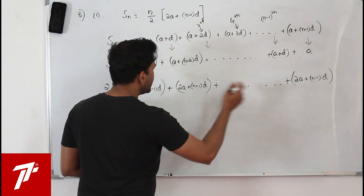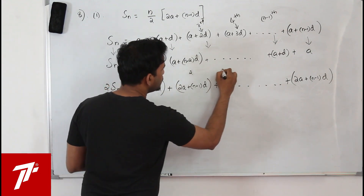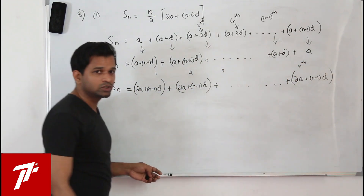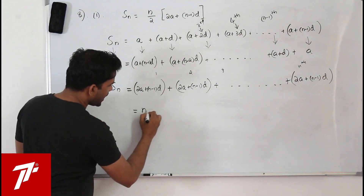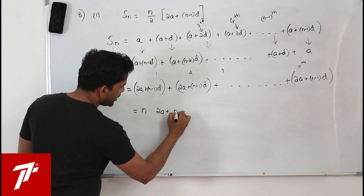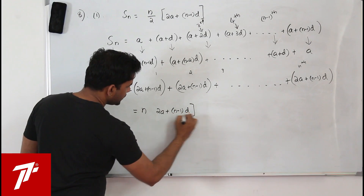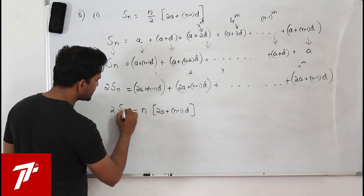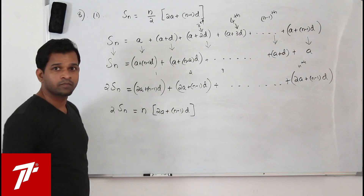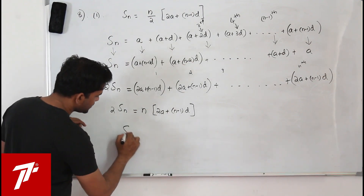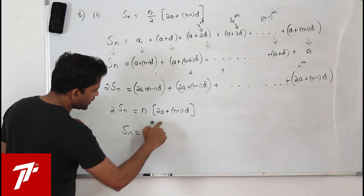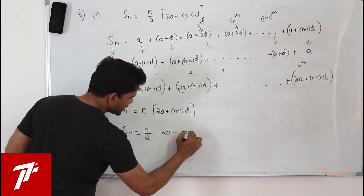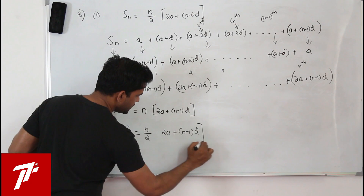So when you add n number of terms, every term equals 2a plus n minus 1 into d. Since all n terms are equal, you can write 2Sn equals n into 2a plus n minus 1 into d. Bringing the 2 across, Sn equals n upon 2 into 2a plus n minus 1 into d. This is how you prove the formula.